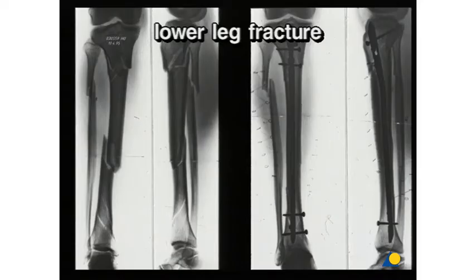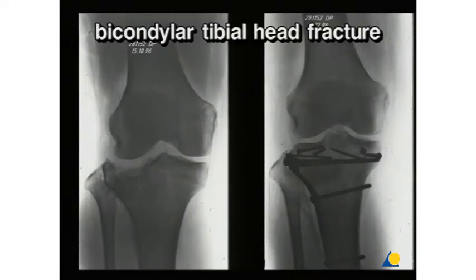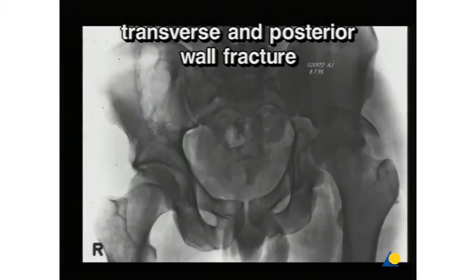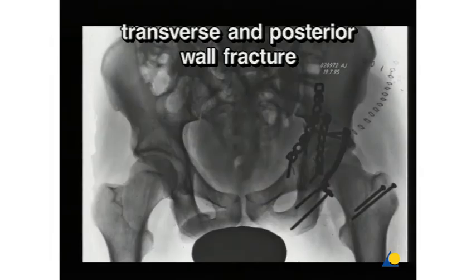With the indirect reduction technique, the fracture is not exposed and the reduction is usually achieved by longitudinal traction, sometimes using reduction instruments inserted through the skin. The result of the reduction is then checked by x-ray, arthroscopy, or computer. The choice of technique depends on the location and fragmentation of the fracture and the degree of damage to the soft tissues.